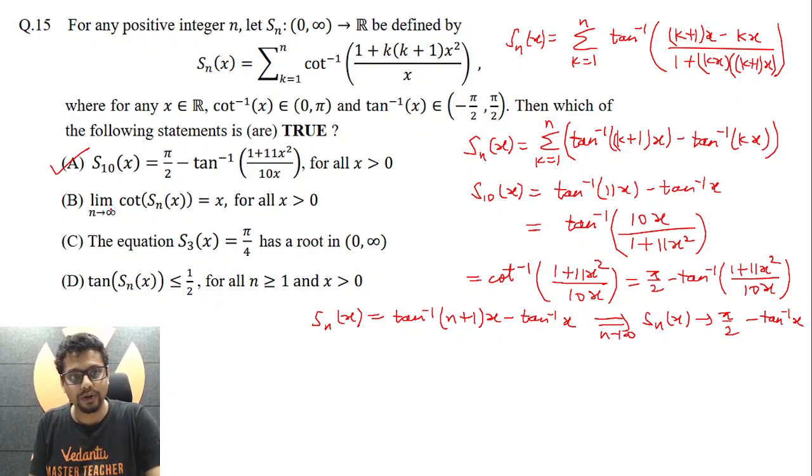So now, what about cot of S_n(x), as n tends to infinity? Clearly it will be cot of pi by 2 minus tan inverse x. Pi by 2 minus tan inverse x is cot inverse x, cot of cot inverse x is x. So this is also correct.